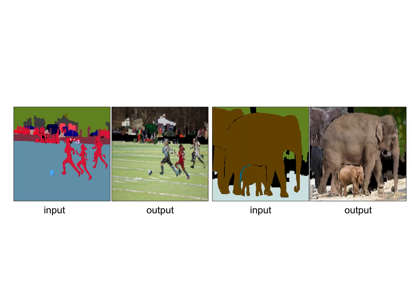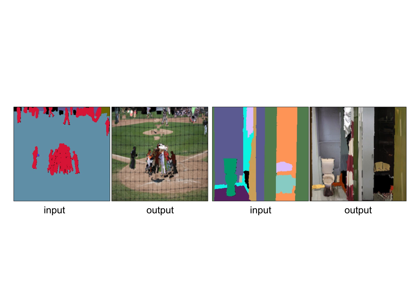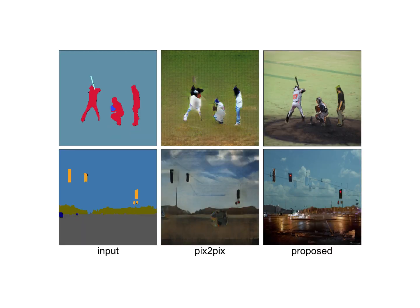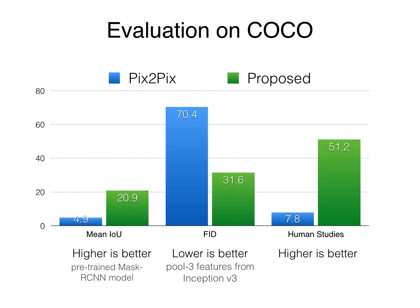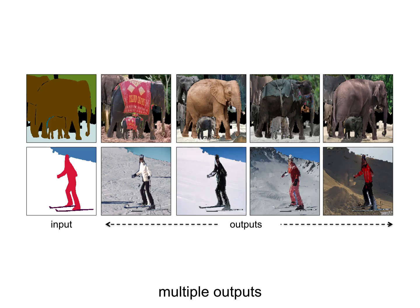We show different input-output examples from our approach, including examples with clutter. We compare our approach with pix2pix, which we found to work best and be easy to use for all purposes. We use different evaluation criteria, such as pre-trained mask R-CNN and scene models to study segmentation on generated images, FID score, and human studies. The proposed approach works better on all measures, and can easily generate multiple outputs.